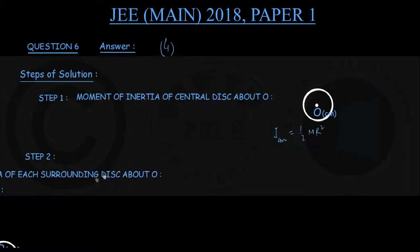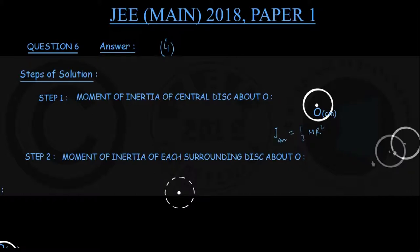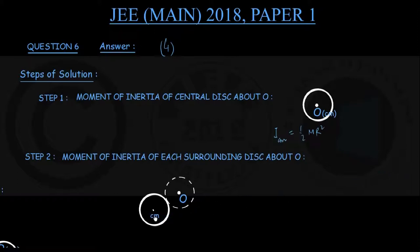In step number 2, we find the moment of inertia of each of the 6 surrounding disks about the point O. Referring to the figure, the central disk is shown along with one of the 6 surrounding disks in bold. Point O is the center of the central disk, and the center of mass of the surrounding disk coincides with its geometric center. Since each disk has radius r, the separation d between the center of the surrounding disk and point O must equal 2r.